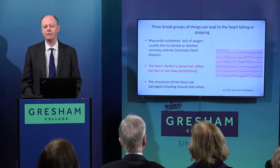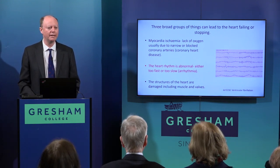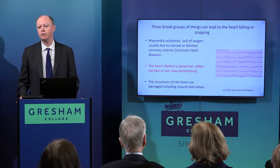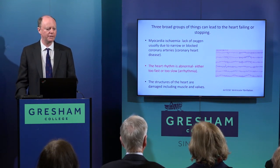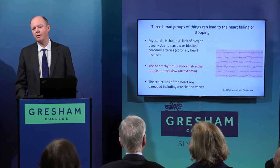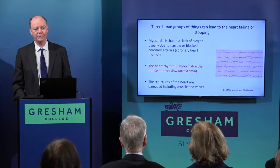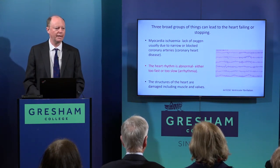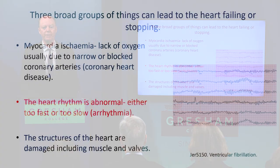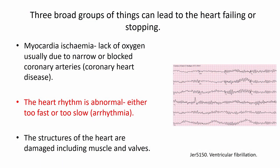This series of lectures I've been giving this year covers the major conditions which lead to heart disease in humans. The first group, which I've talked about already, are diseases of the coronary arteries — things that lead to angina, heart attacks, and problems of that sort. In this lecture I'm going to talk about rhythm problems — the heart going too fast or too slowly — and then in the last lecture I'll talk about heart valves, heart muscle, and structures.